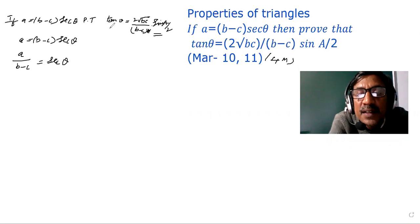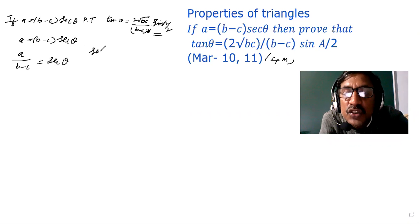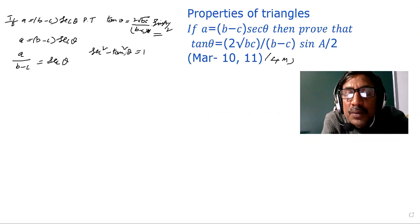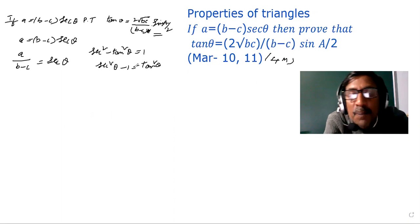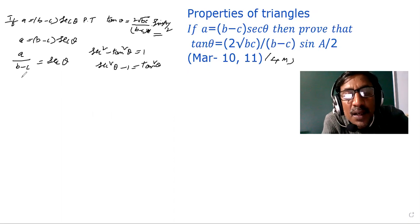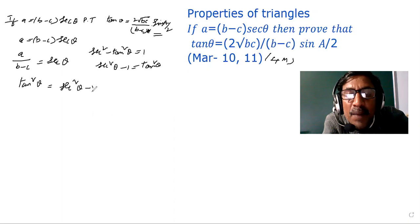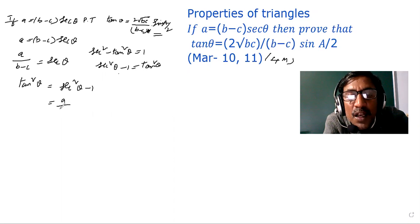Why? Because there is a relation between tan theta and sec theta: sec squared theta minus tan squared theta equals 1. So we can say tan squared theta equals sec squared theta minus 1. Substituting sec theta equals A by (b minus c), we get tan squared theta equals [A/(b-c)]² minus 1.